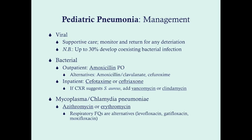For mycoplasma or chlamydia pneumonia, give azithromycin or erythromycin. We tend towards azithromycin because there are fewer adverse effects. Azithromycin is very convenient — one pill for five days, also called a Z-pack. Azithromycin is our treatment of choice for mycoplasma and chlamydia pneumonia. You can also use a respiratory fluoroquinolone — such as levofloxacin or gatifloxacin — for patients who don't tolerate or are allergic to azithromycin or erythromycin.